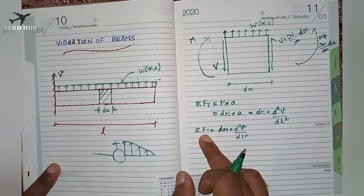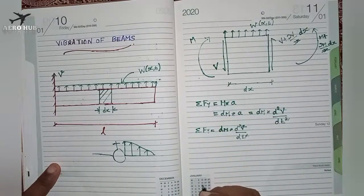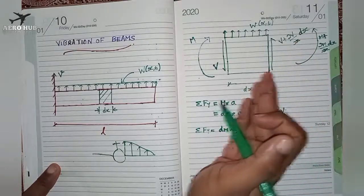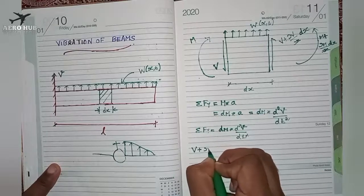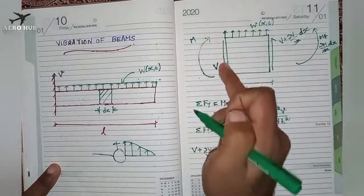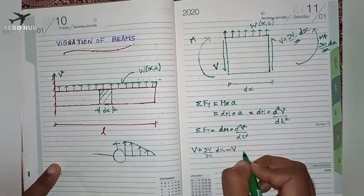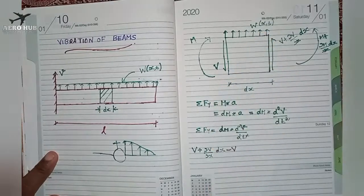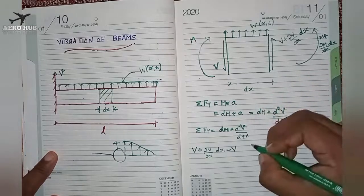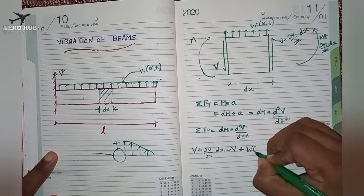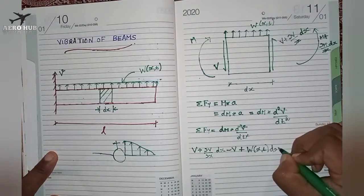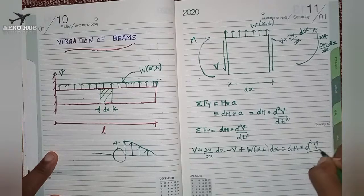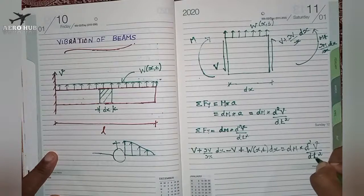Applying Newton's second law, the force summation gives: V plus (∂V/∂x)·dx creates a sagging moment so it is positive; minus V (going downward, negative); plus the uniformly distributed load w(x, t) multiplied by dx (acting upward, positive) equals dm times d²v/dt².